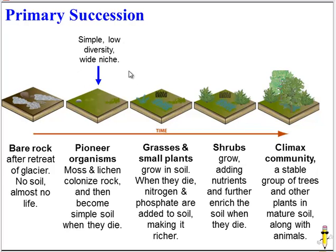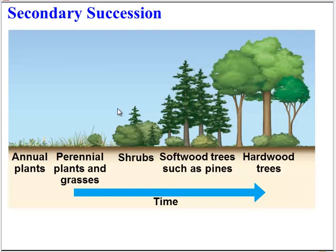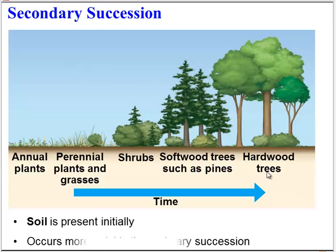The pioneer group is a very simple, low-diversity community, and their niche is very wide because there isn't a lot of competition. In the climax community, though, because there's so much diversity, each species has a pretty narrow niche in which to survive. Secondary succession is similar — we have increasingly complex organisms moving into the community — but we don't start with bare rock. We start with soil, so secondary succession is faster. Because it's starting with soil, there can be some plants initially, and it won't take quite as long to reach the climax community.